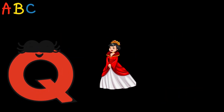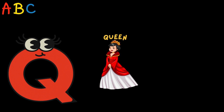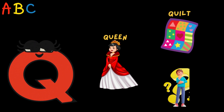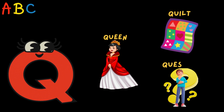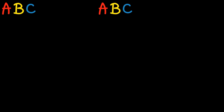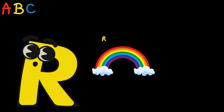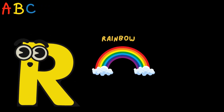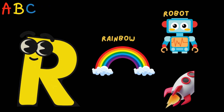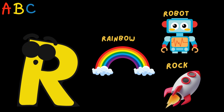Q is for Queen, Quilt, Question. R is for Rainbow, Robot, Rocket.